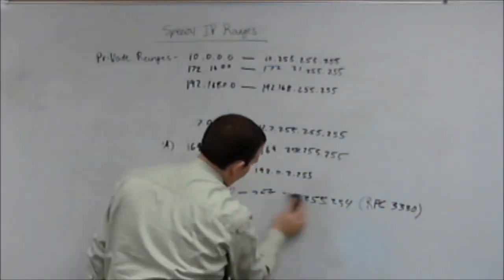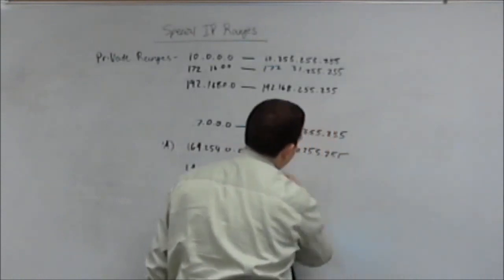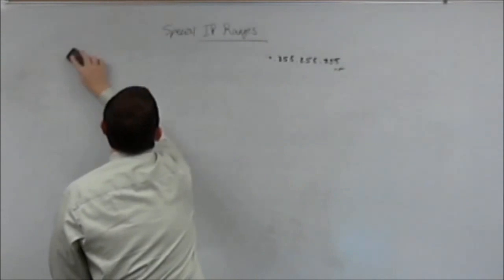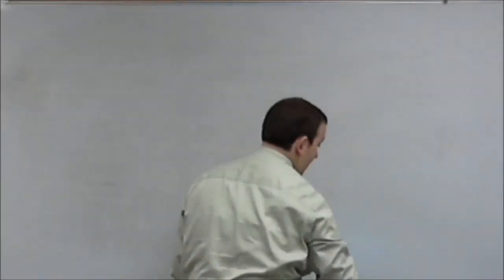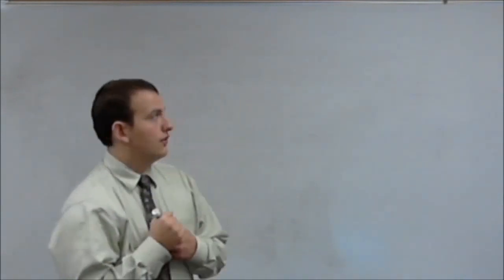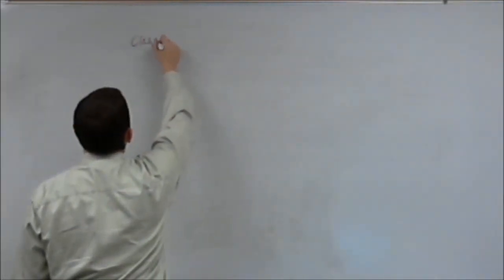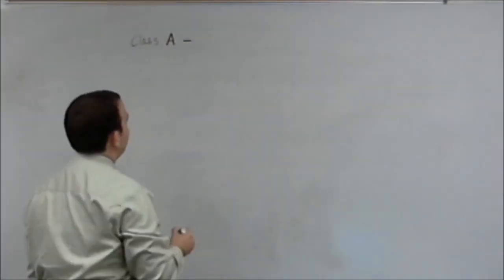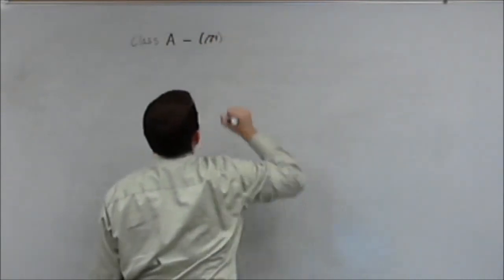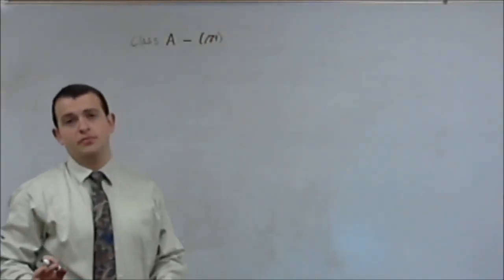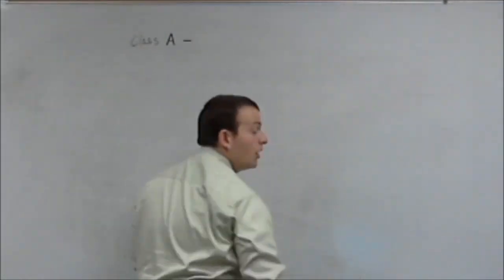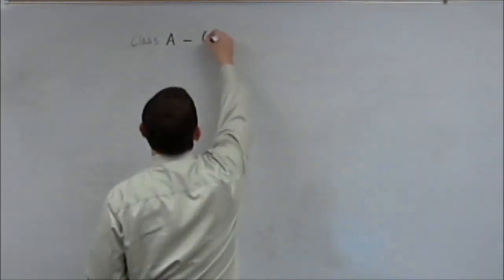So classful addressing is going to be breaking down all IP addresses by range and subnet mask into five chunks. Your first chunk is class A. Class A will always use a slash 8 address.